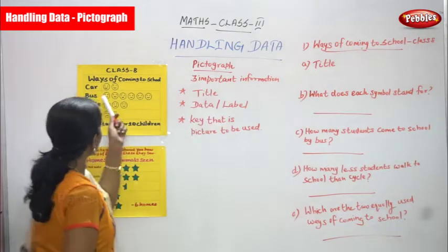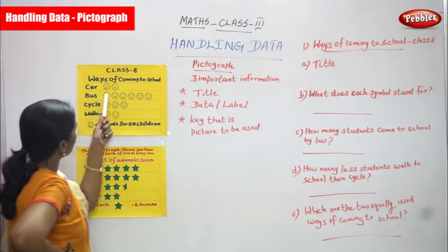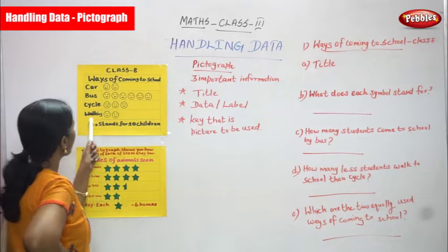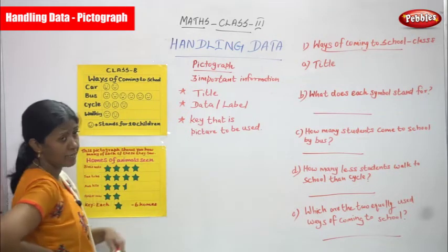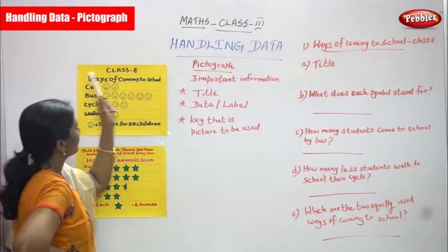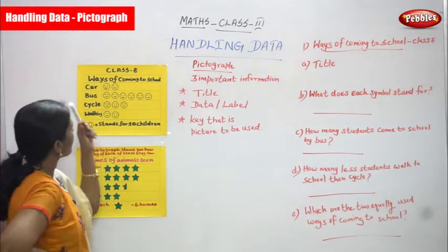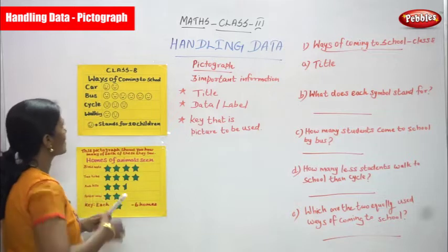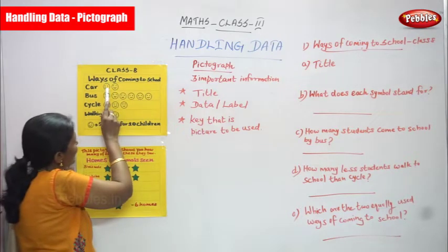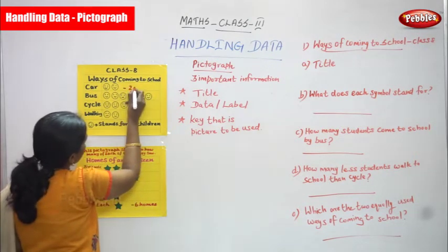First question: Class 8 ways of coming to school. For car, two smileys are drawn. Each smiley stands for 10 children. So car means two smileys — two smileys means 20 children.